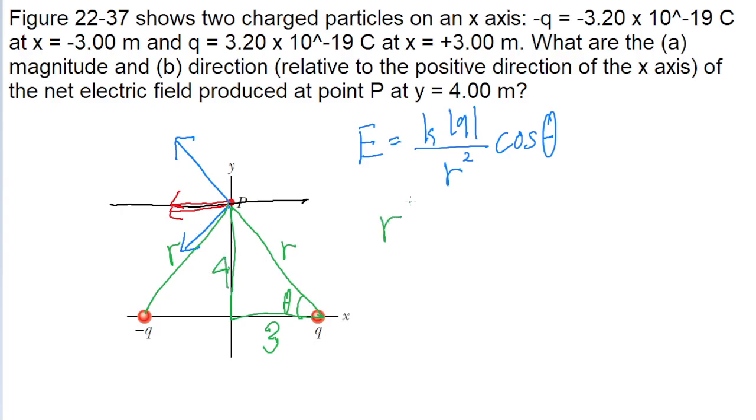So we can find the value of R by applying the Pythagorean theorem, which states that the square of the hypotenuse of the triangle is equal to the sum of the squares of the other legs. So four squared plus three squared.